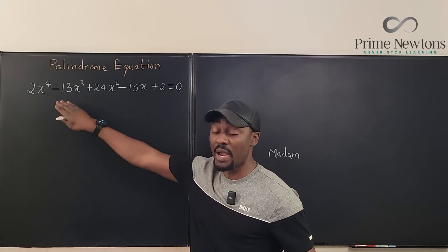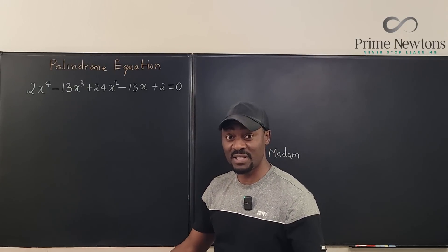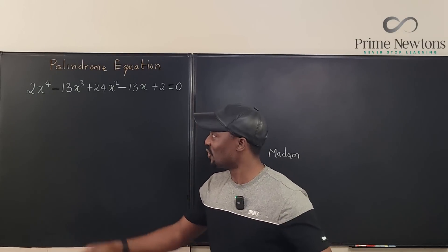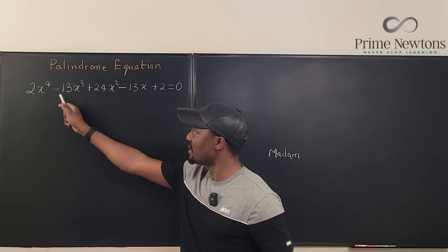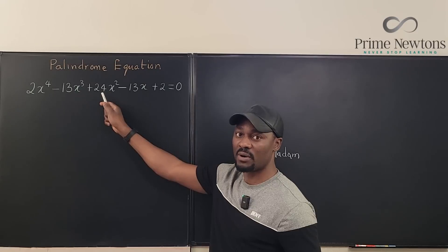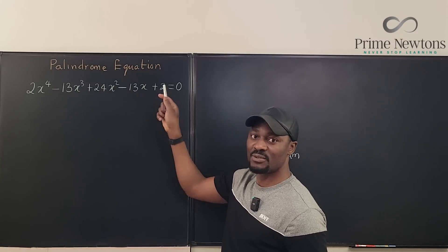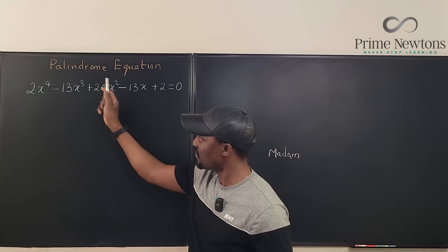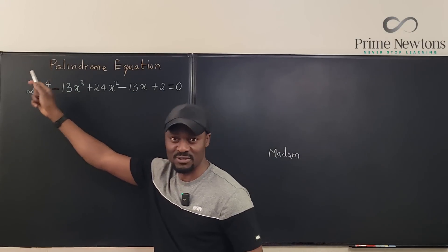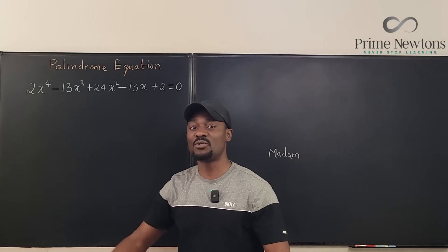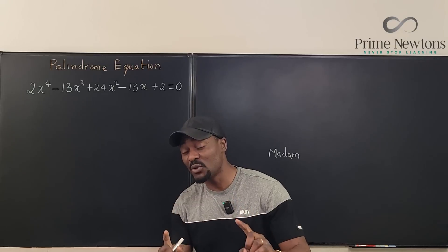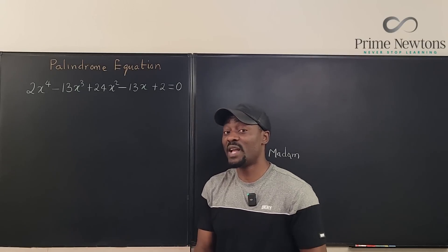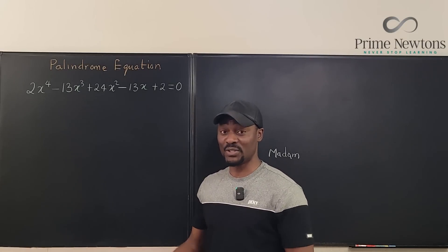You can have equations that have the same characteristic in terms of the coefficients of the terms. For example: 2, -13, 24, -13, 2 — if you go this way it's the same thing: 2, -13, 24, -13, 2. This is what you call a palindrome equation, and there's a special way of solving them that makes your life a lot easier.